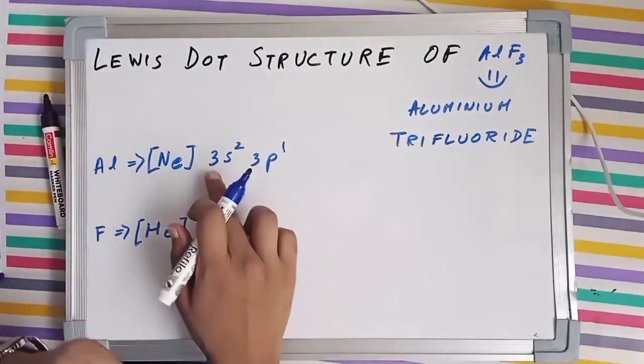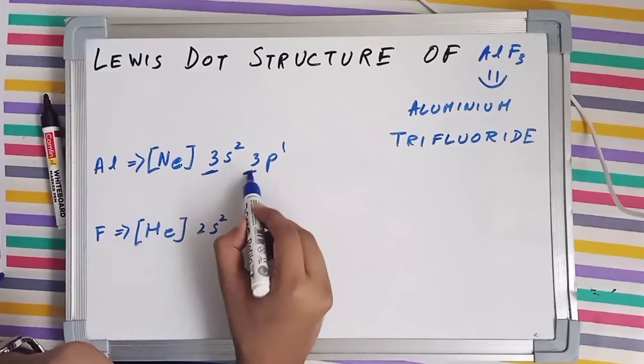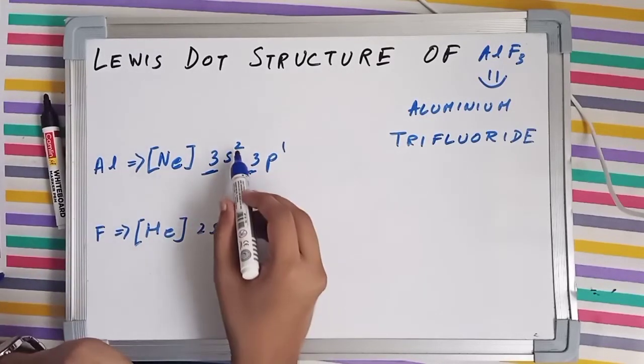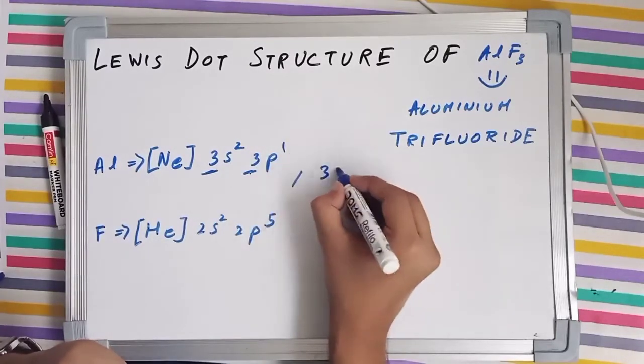So the valence shell is the third shell, the outermost shell, and valence electrons are those electrons which are present in the outermost shell. The outermost shell is the third shell so 2 plus 1, 3 valence electrons.